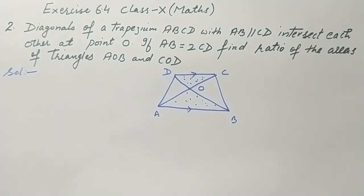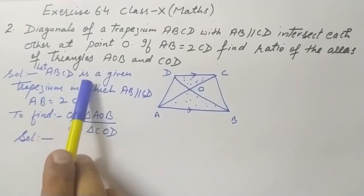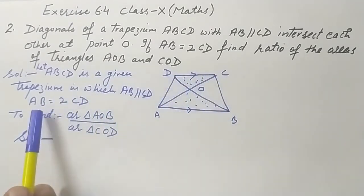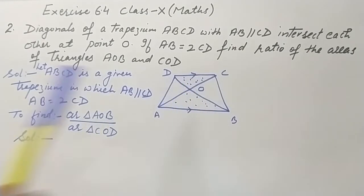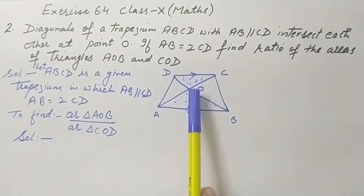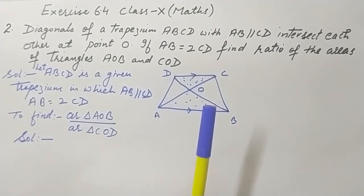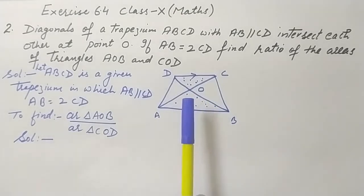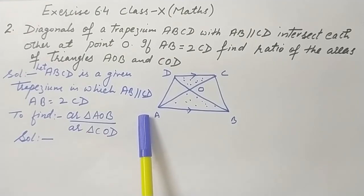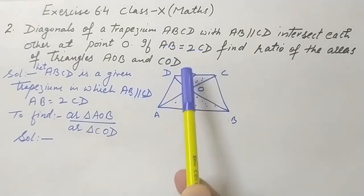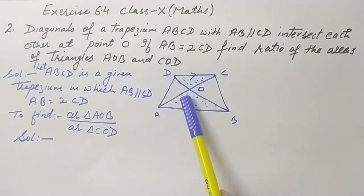Let's start. Given: ABCD is a trapezium in which AB is parallel to CD, and AB is double of CD. We need to find the area of triangle AOB over the area of triangle COD. We will make these two shaded triangles similar, and then apply the area theorem. The area theorem states that if two triangles are similar, then the ratio of their areas equals the square of the ratio of their corresponding sides.